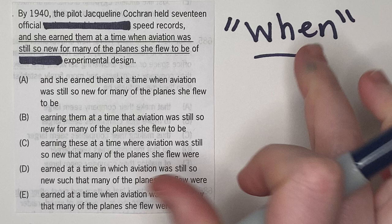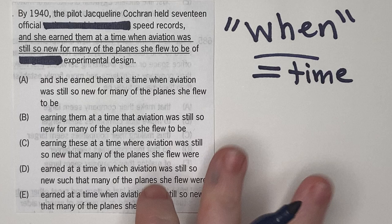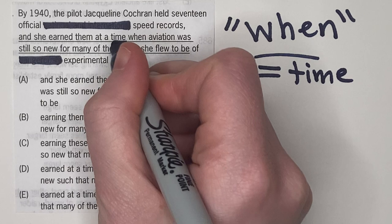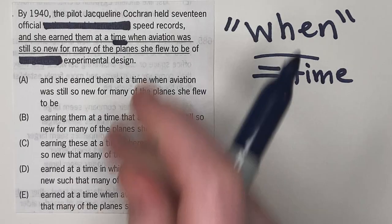So when can only refer to time. And what's fun about this sentence correction question is that it literally says, and she earned them at a time. So that's pretty helpful.